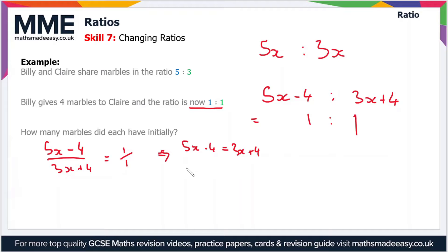Adding 4 to both sides gives 5x = 3x + 8. Subtracting 3x gives 2x = 8. Dividing both sides by 2 gives x = 4.